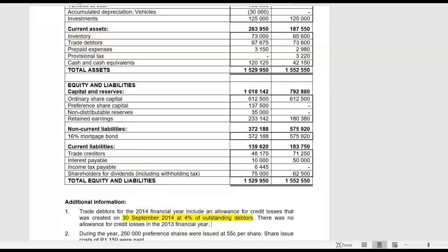Now there was nothing more included in the trade debtors figure because we have prepaid expenses separately. So we can assume that is really only debtors — they only say trade debtors, not trade debtors and other receivables, and they tell you it is net trade debtors. So if that amount for trade debtors, which was 67,675, includes a deduction of 4% of trade debtors which was our allowance account, what was the gross figure of trade debtors? That was then 74,000.